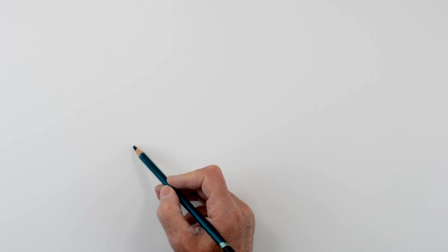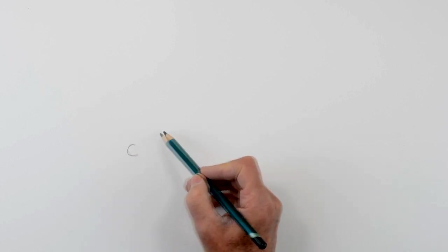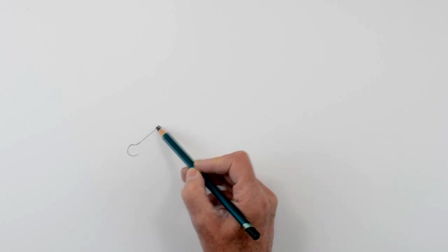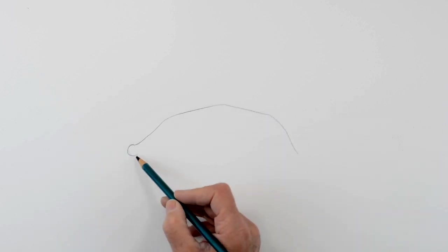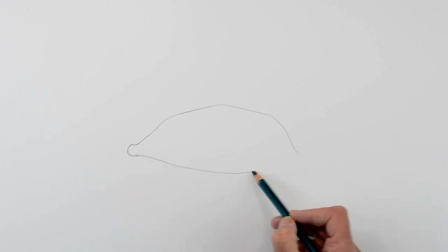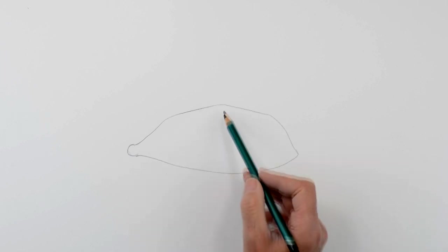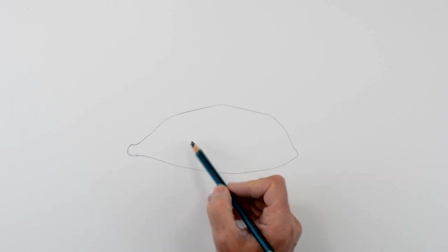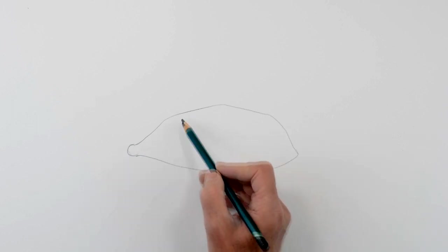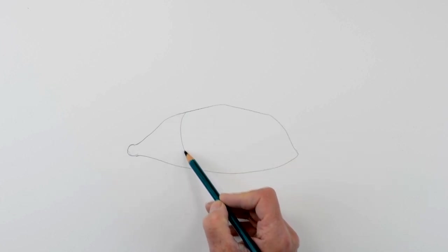Now we're going to start by drawing very lightly first of all. So I'm just starting here where the tear duct is and we'll come around, across and down, and we'll sweep around here. Now don't make this shape too high because if you make it too high it will make it look as though it's a very innocent young child and we don't want that in this particular section.